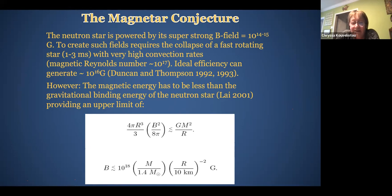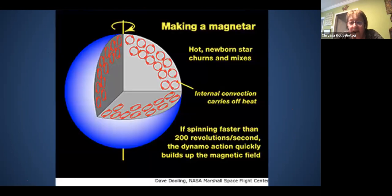And in order to create such fields, we have to have, nature has to have a collapse of a fast rotating star of the order of 1 to 3 milliseconds, with a very high convection rate, so magnetic Reynolds number more than about 10 to the 17. Ideal efficiency can generate 10 to the 16 Gauss, according to Duncan and Thompson. However, it has to be less than the gravitational binding energy of the neutron star, because otherwise the neutron star will fall apart. This requirement is in the first equation, and if you solve from the equation, that the magnetic field has to be less than 10 to the 18 Gauss. So that's the maximum that the magnetic field can be before it breaks the star. And if you want a nice picture on that, you can actually see the neutron star, which is a hot newborn star, turns a lot, mixes a lot, high convection rate. And if it spins faster than 200 revolutions per second, it builds up a very strong dynamo and magnetic field.